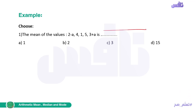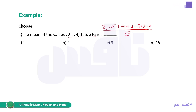The sum will be (2−a) + 4 + 1 + 5 + (3+a), over how many values? Let's count: one, two, three, four, five — over five. We notice that negative a and positive a cancel each other out, so we can get the result by calculator. It will be 3. So the right answer is letter C.